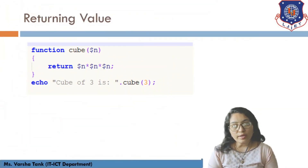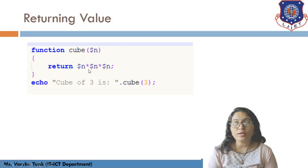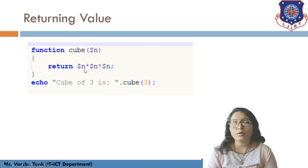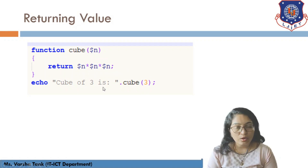Next is returning a value. A function can return a value. For example, 'function cube($n) { return $n * $n * $n; }' — this returns the cube of whatever value you pass. When you call cube(3), it returns 3×3×3, which is 27.